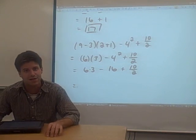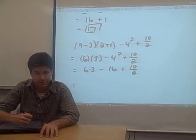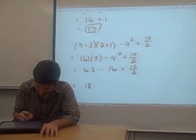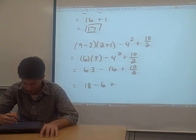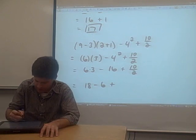Now we can just multiply and divide. Six times three is 18. And we have some division in this problem. 10 divided by two. Pretty simple. It's just a five.